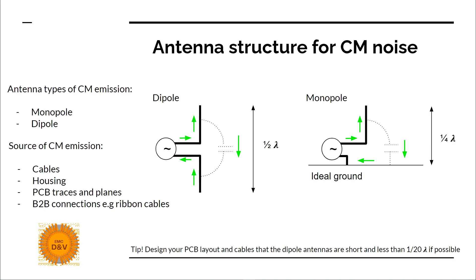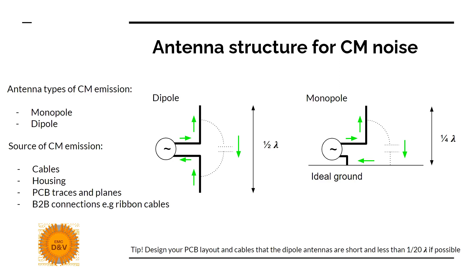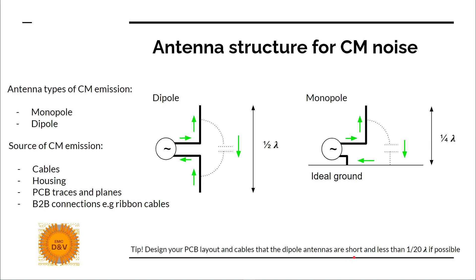In the vertical axis there will be no emission. The radiation pattern for a monopole antenna will have only the upper half plane. The source of common mode emission in your device is not obvious. For a dipole antenna, any voltage difference between two conductors can make an antenna — for example between your PCB ground and the housing, or between two PCBs with board-to-board connections such as ribbon cables. You want to connect your housing to your PCB ground to reduce voltage difference between them. For monopole antennas, any cable going outside your device can have a capacitance to the housing, and the housing will be the ground reference that increases your emission. The tip is: design your PCB layout and cables so that the dipole antennas are short and less than 1/20 wavelength if possible.